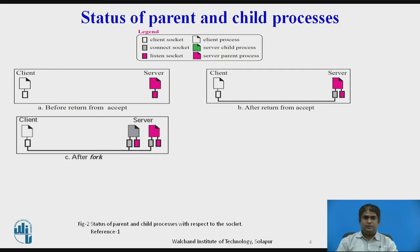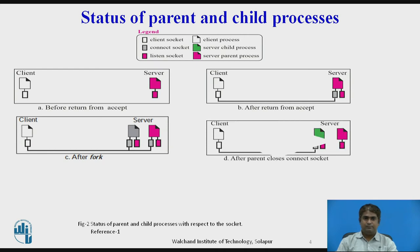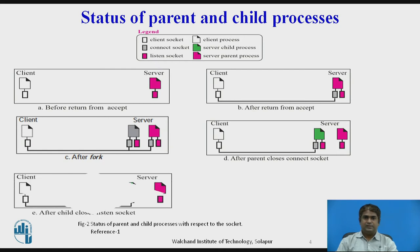The client is connected to the connect socket. After calling the fork function, shown in part C, we have two processes each with two sockets, and the client is connected to both processes. The parent needs to close its connect socket to free itself from the client and be free to listen to requests from other clients — shown in part D. Before the child can start serving the connected client, it needs to close its listen socket so that future requests do not affect it, shown in part E.